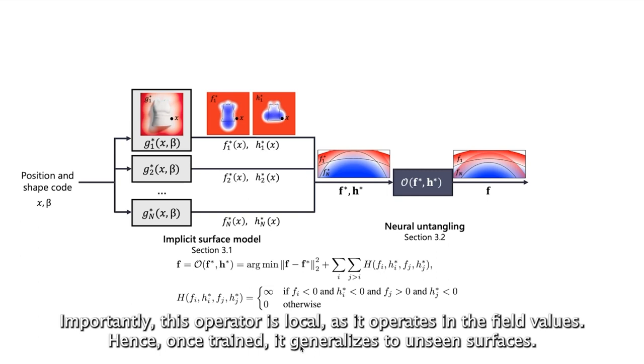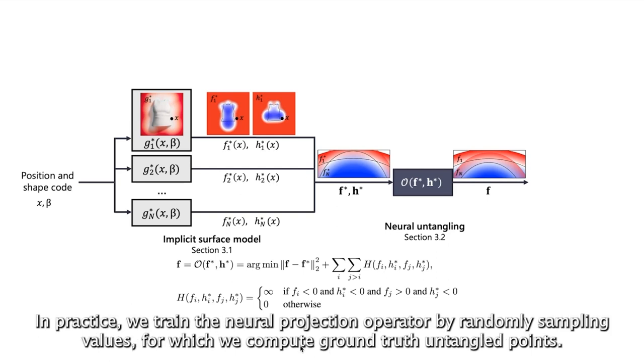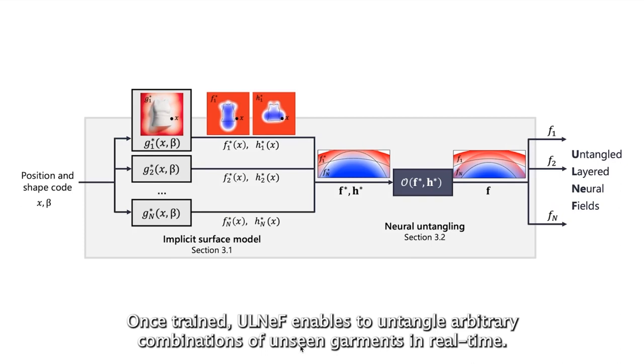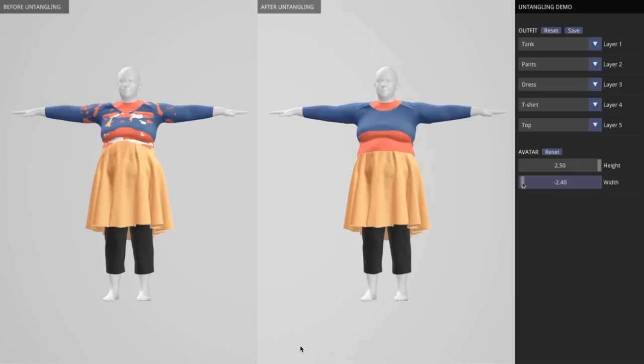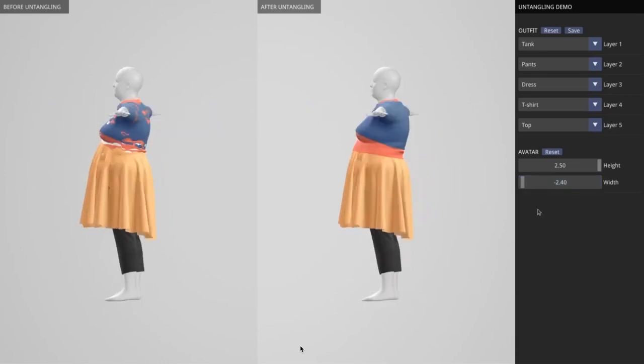Importantly, this operator is local as it operates in the field values, hence it generalizes to unseen garments. In practice, we train the neural projection operator by randomly sampling values for which we compute ground truth untangled points. Our model enables us to untangle arbitrary combinations of unseen garments in real time.